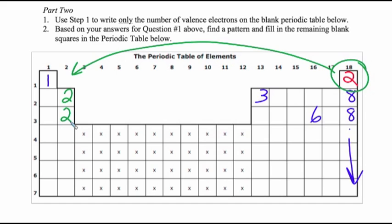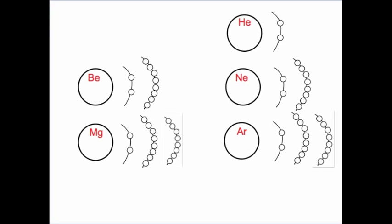To figure that out, we need to look at how the shells are filled. Helium is atomic number two — it has two protons and two electrons, so the outermost shell has two electrons. Neon is atomic number ten with ten electrons: two are in the first shell, and when that's filled we go to the second shell, giving eight in the second.